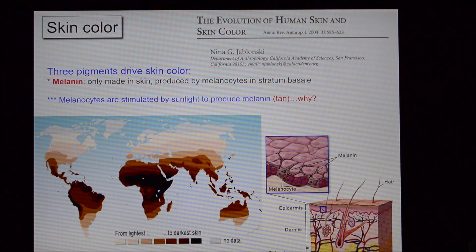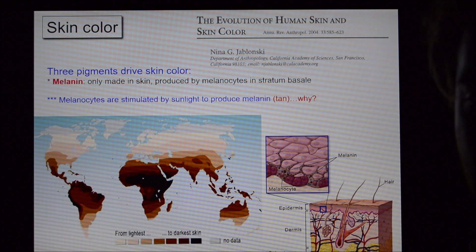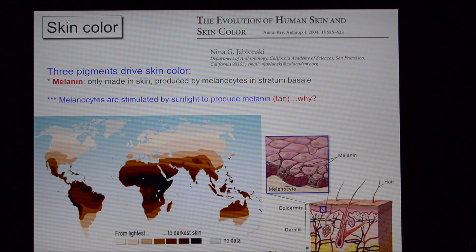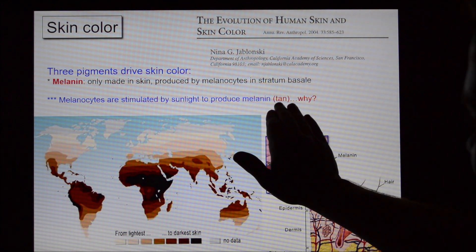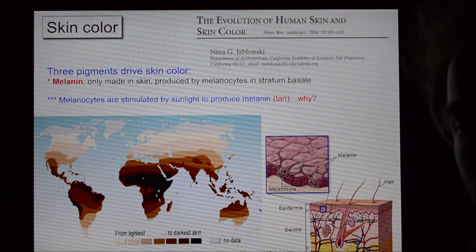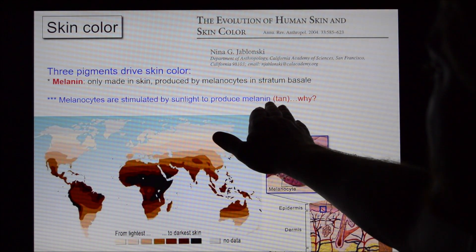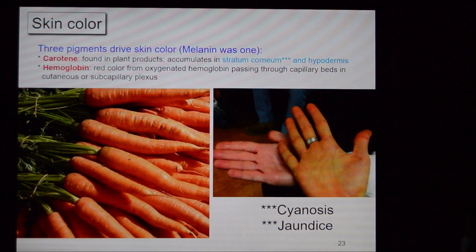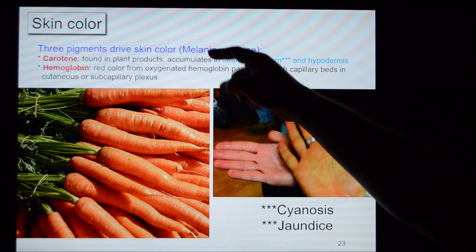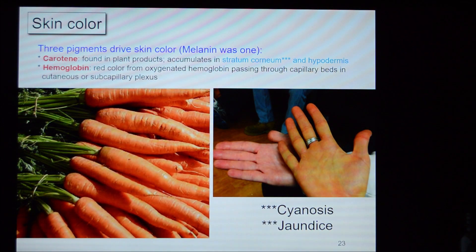Three pigments drive skin color. Melanin is the main one. Tanning occurs when the body receives high UV radiation and says 'we better protect ourselves,' so it produces more melanin. The two other pigments are carotene and hemoglobin. Carotene is sequestered from foods we eat — most notably carrots. You can see an orangey hue to the skin of someone with a high-carotene vegetarian diet compared to a standard diet. We store carotene in the stratum corneum, so areas where it's thickest — like palms and soles — take on a more orangey color.